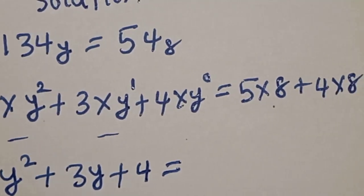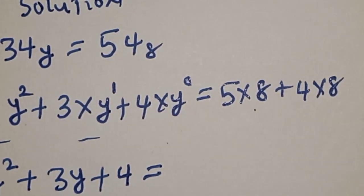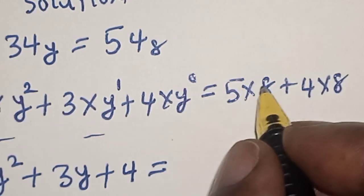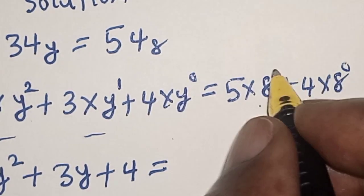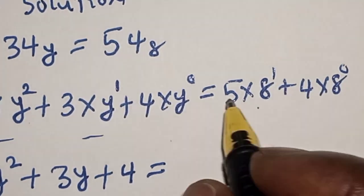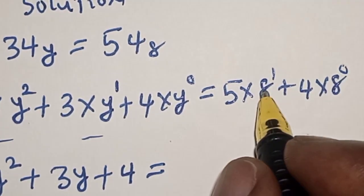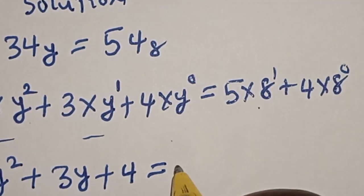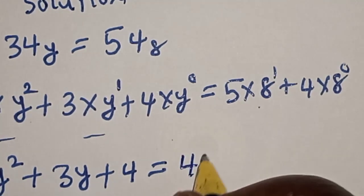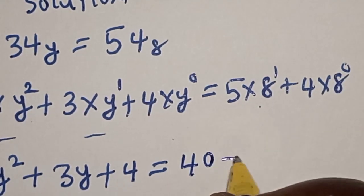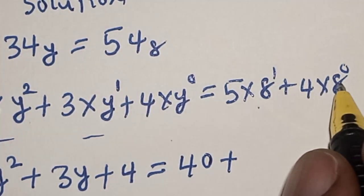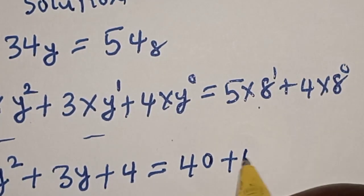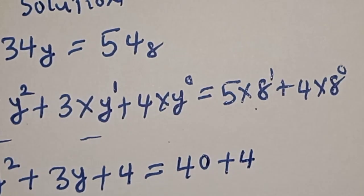Now let's look at the right-hand side. This is 8 raised to the power 0 and 8 raised to the power 1. Then 8 times 5 is 40, plus 8 raised to the power 0 is 1 times 4, which is 4.